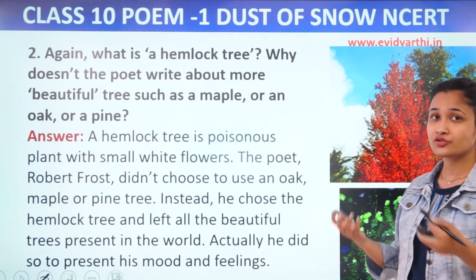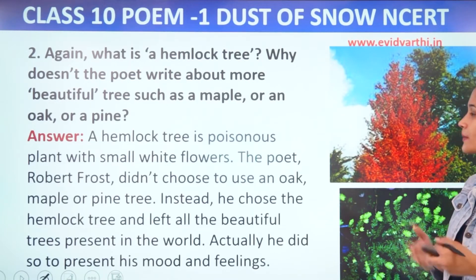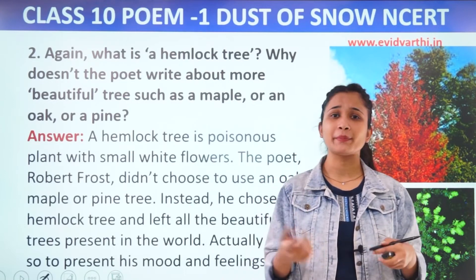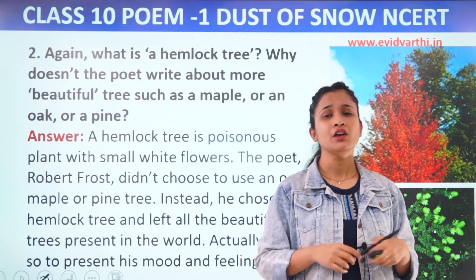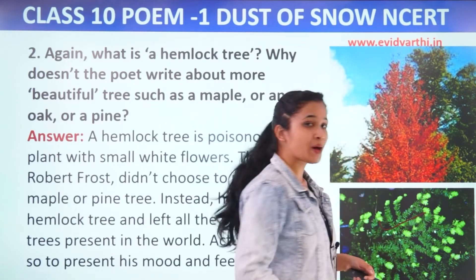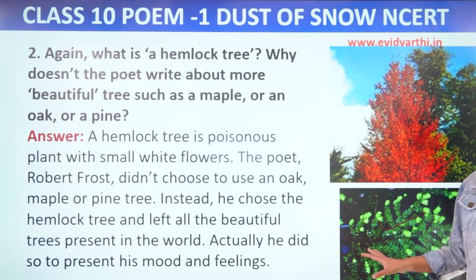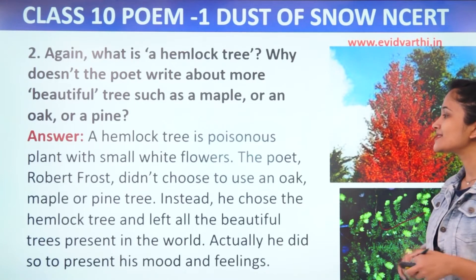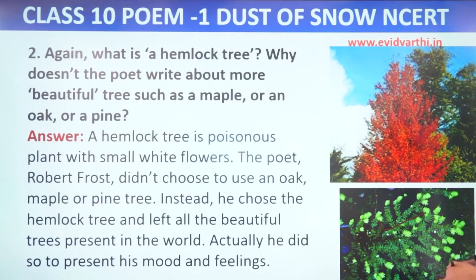Next question: What is a hemlock tree? And why doesn't the poet write about more beautiful trees such as maple, oak, or pine? A hemlock tree is a poisonous plant with small white flowers. The poet Robert Frost didn't choose to use an oak, maple, or pine tree — instead he chose the hemlock tree, leaving all the beautiful trees present in the world.